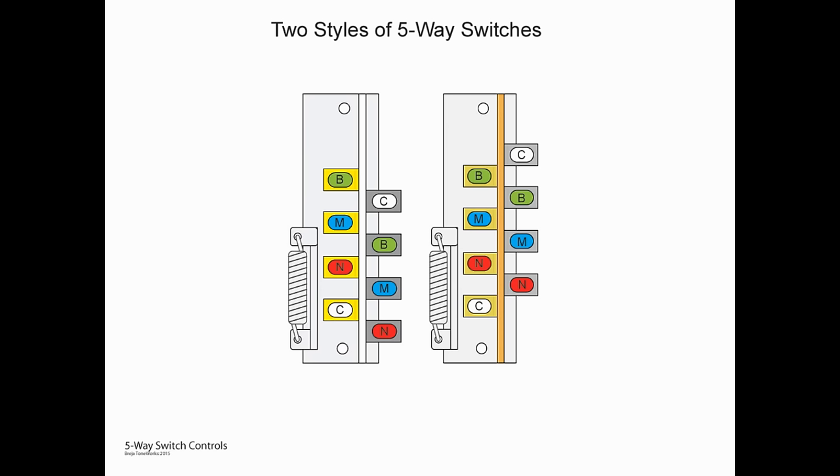Now, one thing I've never understood is they actually have two different styles of five-way switches in which the lugs are slightly offset. So the one on the left is the more common. The one on the right works exactly the same way, except that the left-hand side lugs are lower than the right-hand side. Some people get confused by that. They work exactly the same way. They get wired up exactly the same way. For some reason, a particular manufacturer chose to move the lugs around.